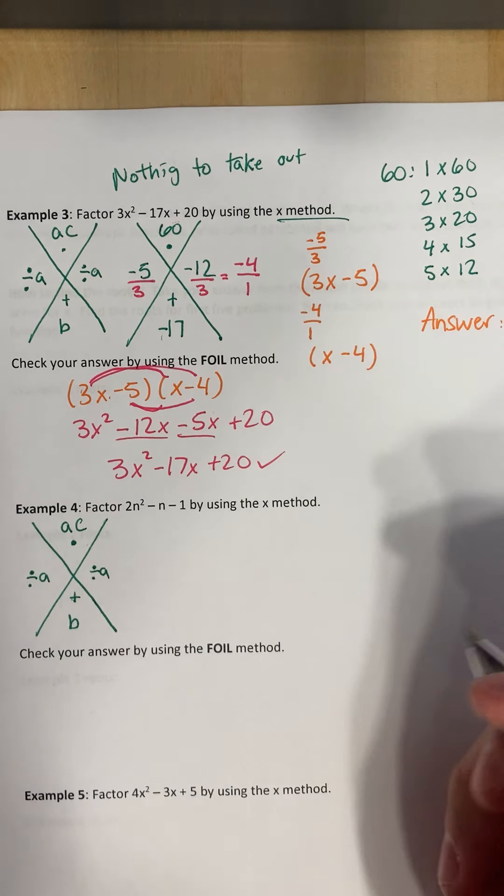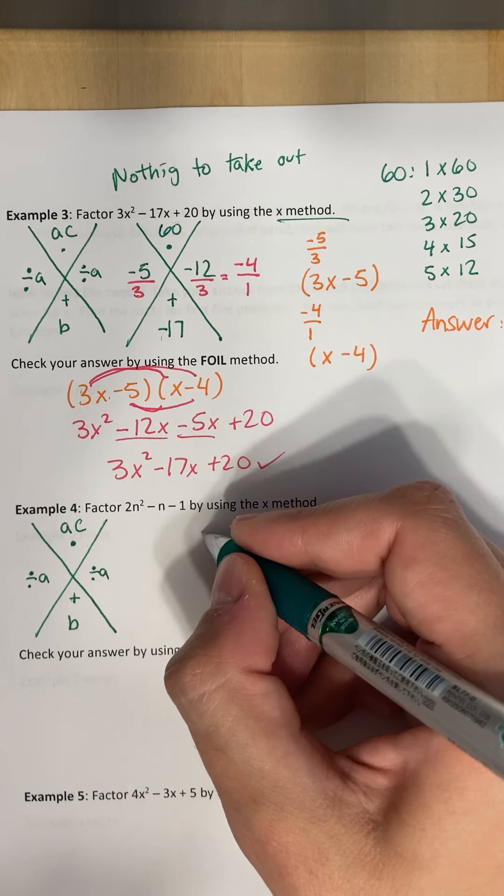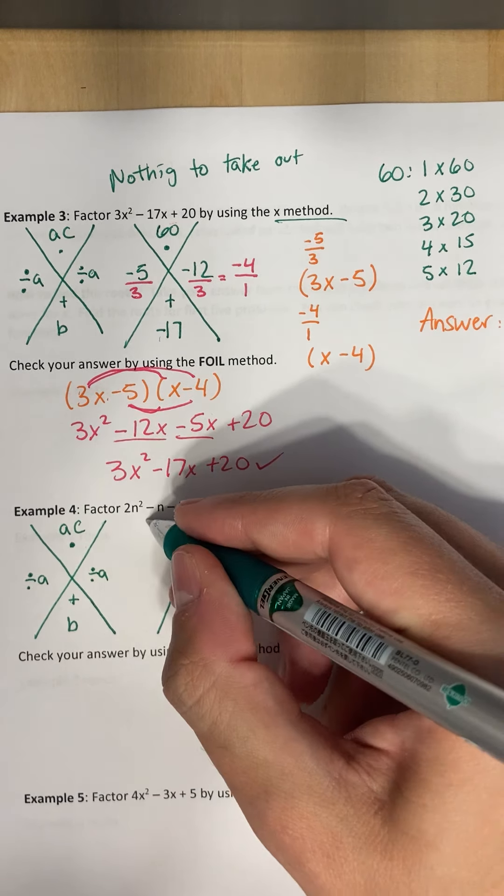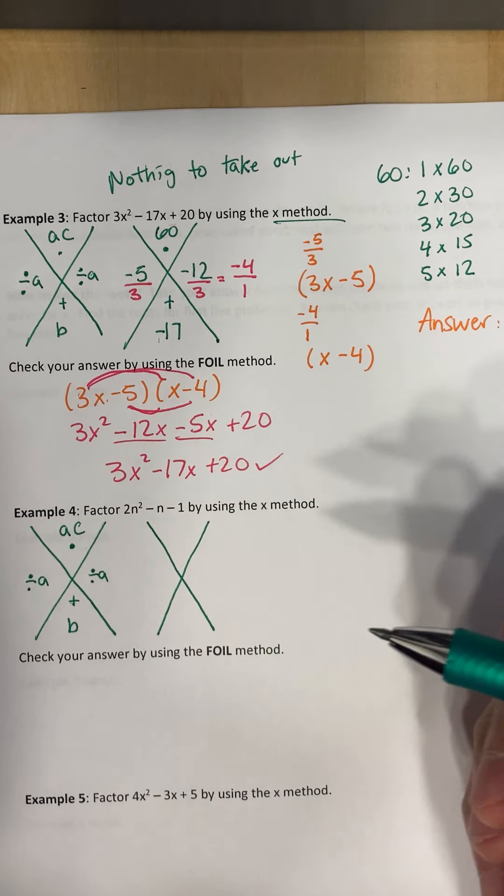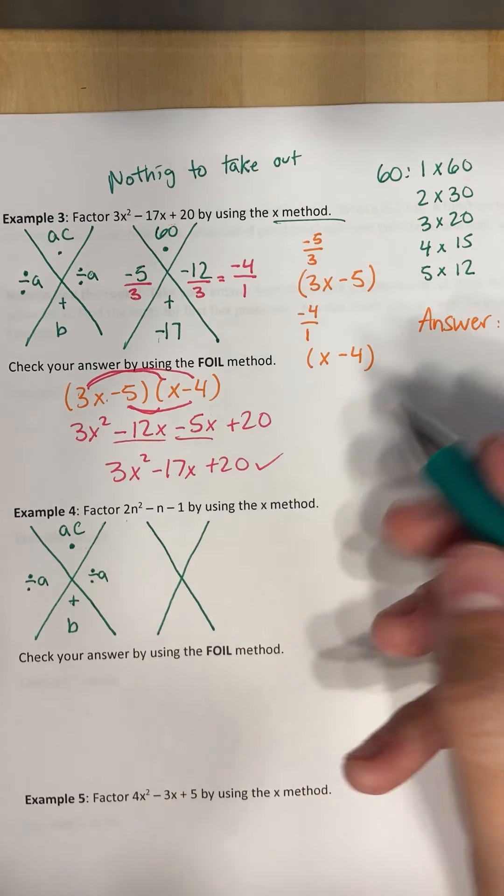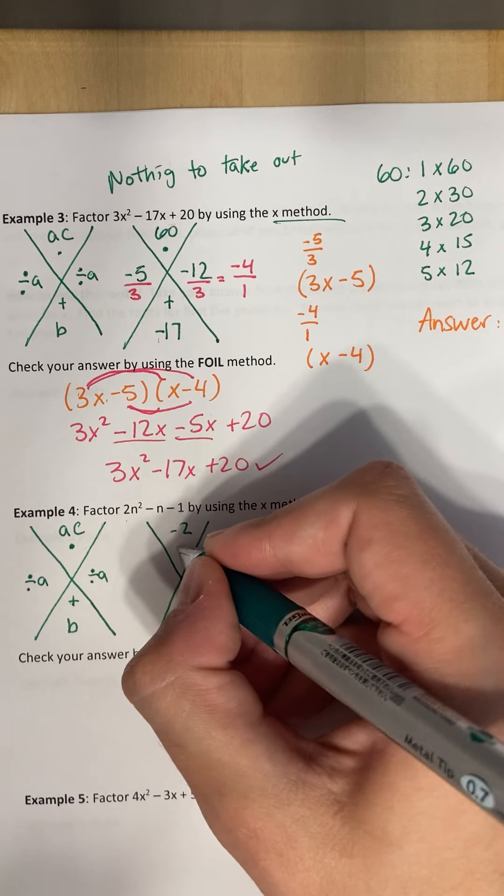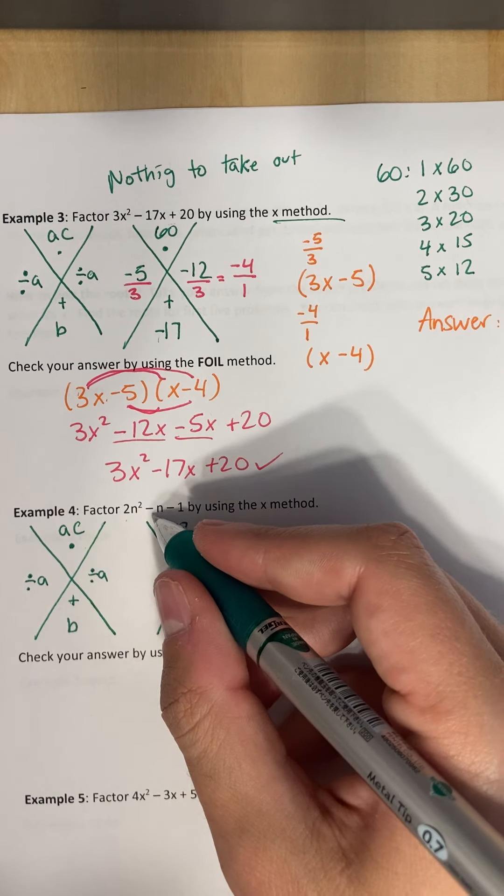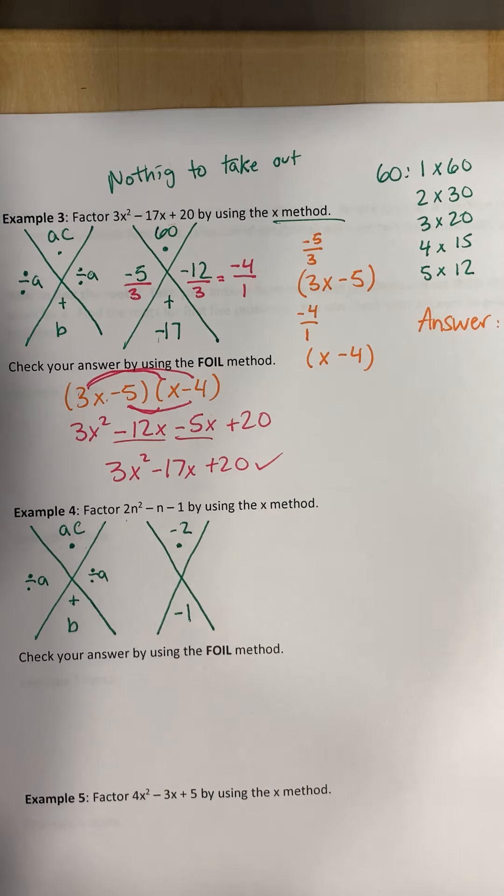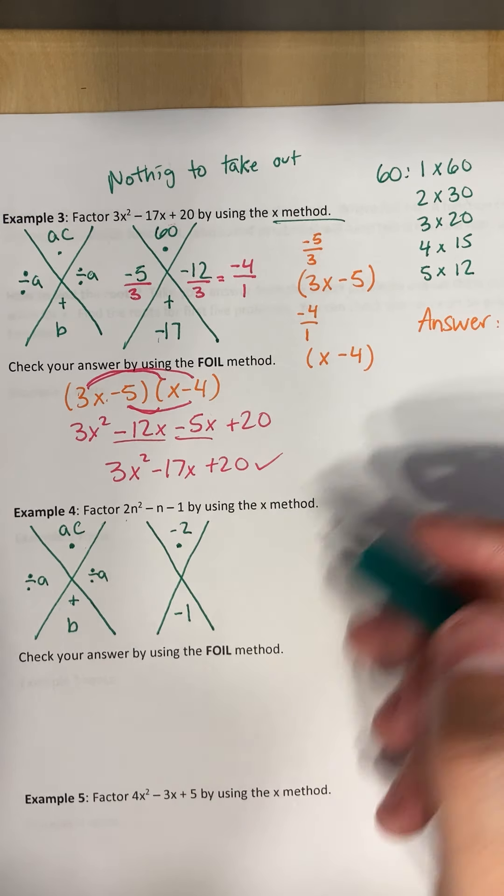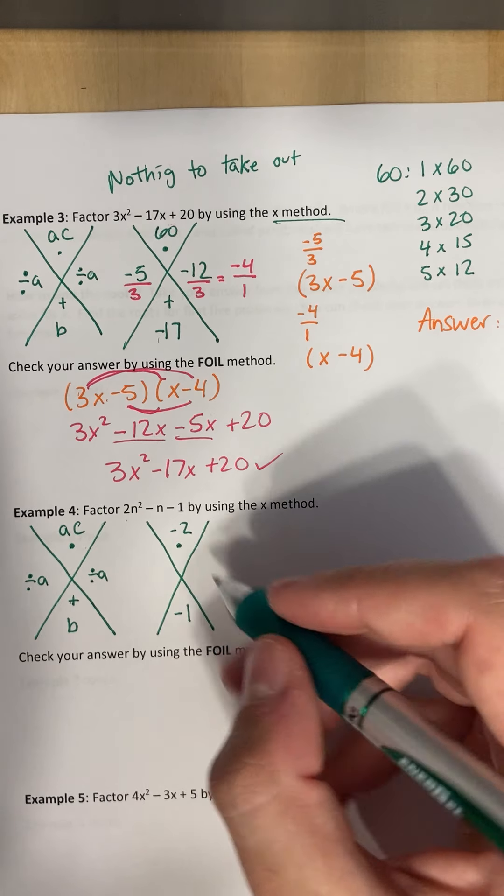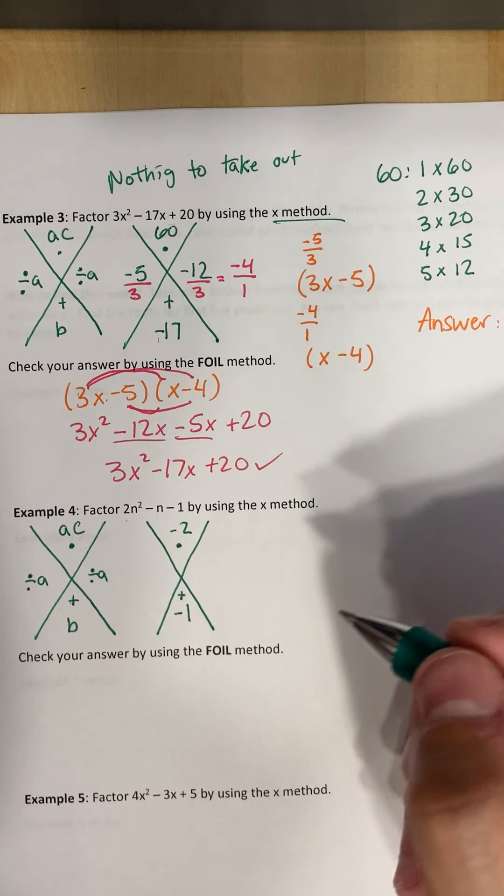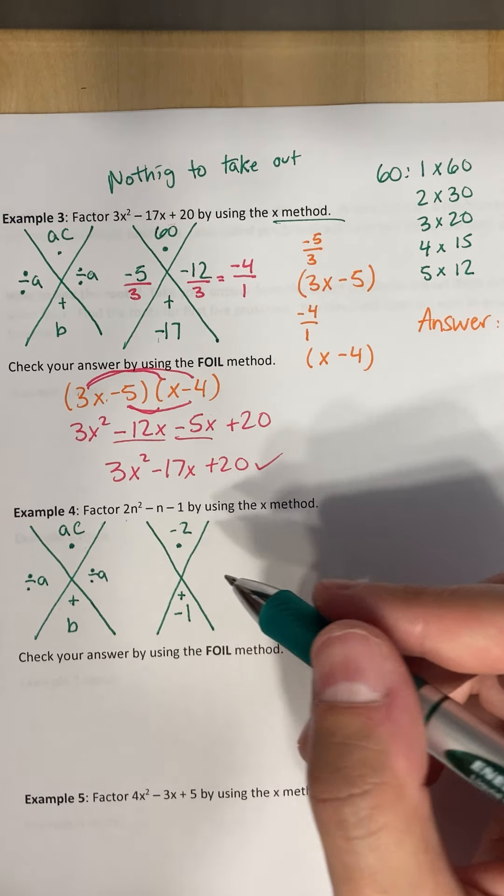All right, so let's draw our x. What is a times c? What's two times negative one? What is negative two? It's going to multiply to get negative two, and what's our b? Our b is negative one. So we want two numbers that add to negative one, but multiply to get to negative two.